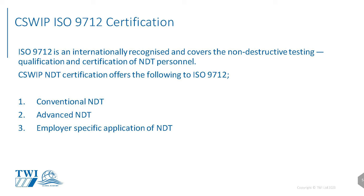C-SWIP covers three categories of NDT: Conventional NDT — the basic methods; Advanced NDT — including phased array and TOFD digital systems; and Employer-Specific Applications of NDT, recognised by ISO 9712, similar to the SNT-TC-1A employer scheme, which can be tailored to a particular company's limited application. This job-specific training is also part of ISO 9712:2022, the new standard. Conventional NDT methods include: ultrasonic inspection, magnetic particle inspection, liquid penetrant, radiographic interpretation, radiographic inspector, visual and optical inspection, ACFM, eddy current, and radiation safety.